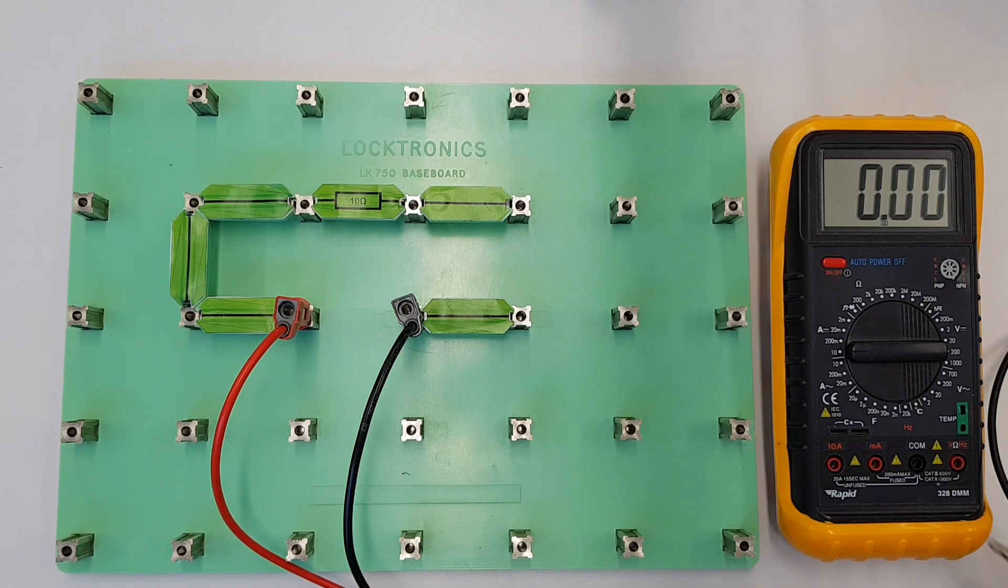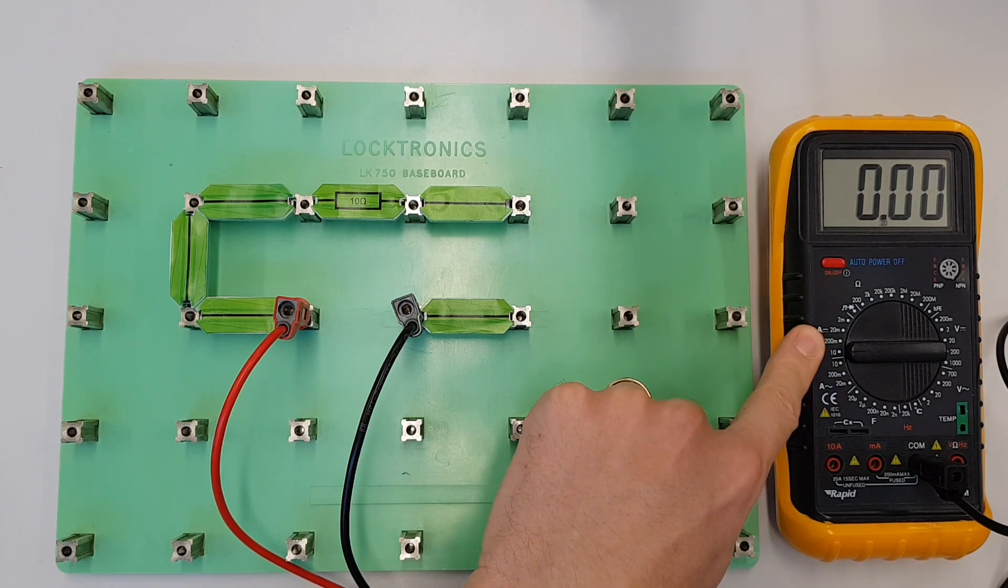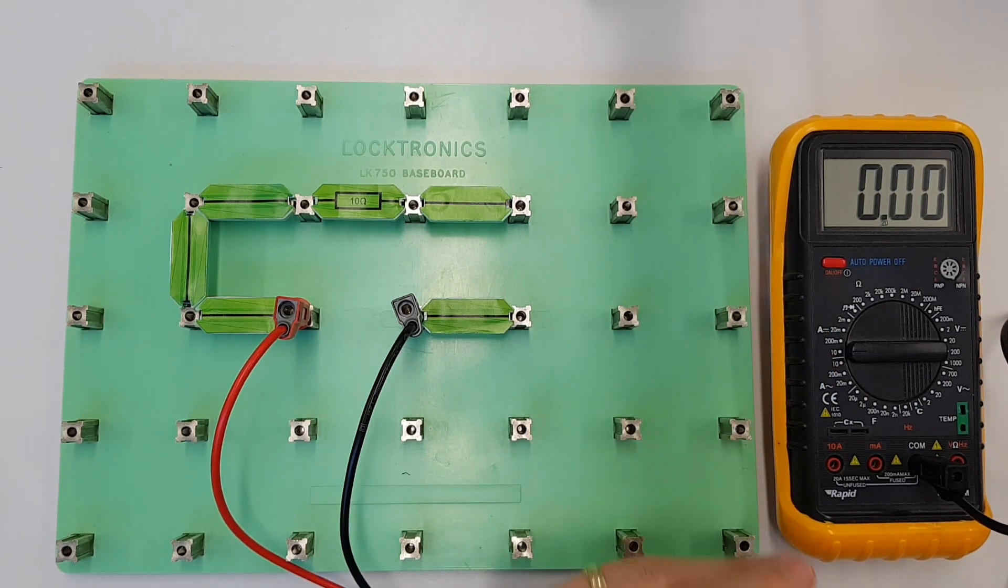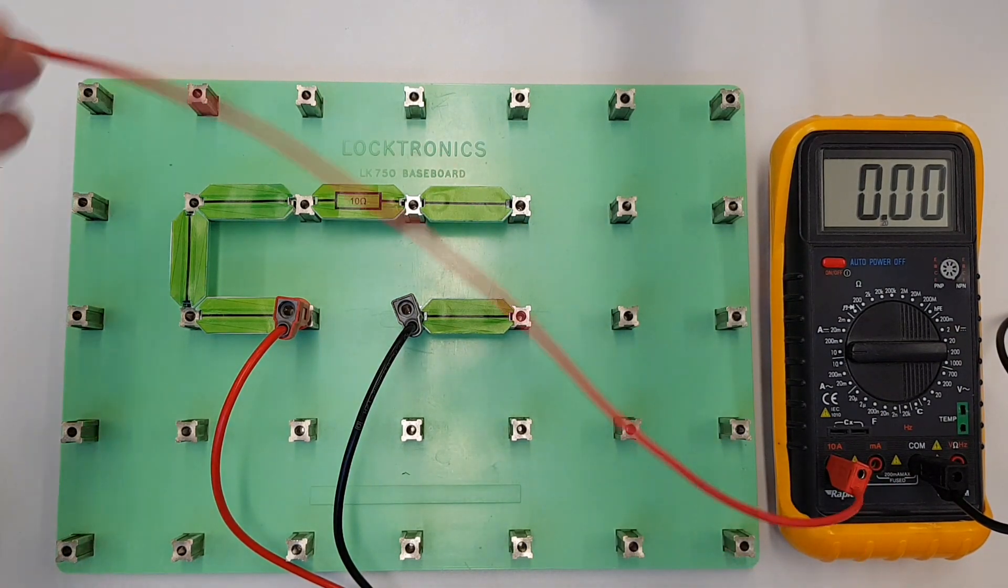So first of all I'm going to make sure that I've got my leads in the right terminal, so we always have one in the common. Now I've got this set to measure up to 10 amps because it might just go above the 200 milliamps range, so we'll just double check this. So we'll plug this into our 10 amp socket as well and then we'll connect this into the circuit.